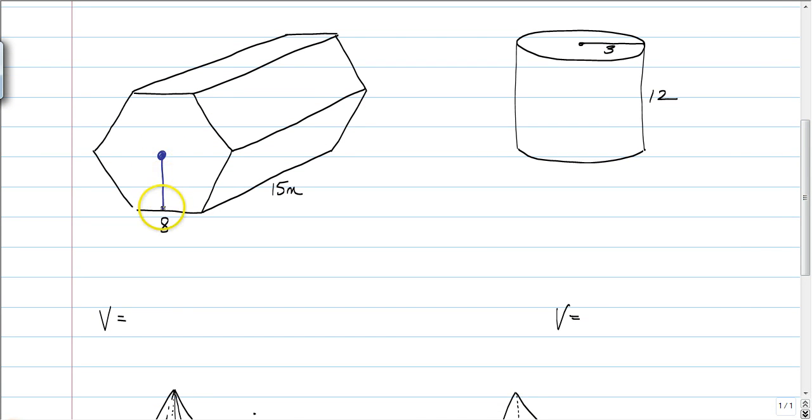So, here's a regular hexagon. We know that the formula for a regular hexagon or a regular polygon is one-half of the perimeter times the apothem. We know that every one of these sides is eight, so our perimeter is going to be 48.